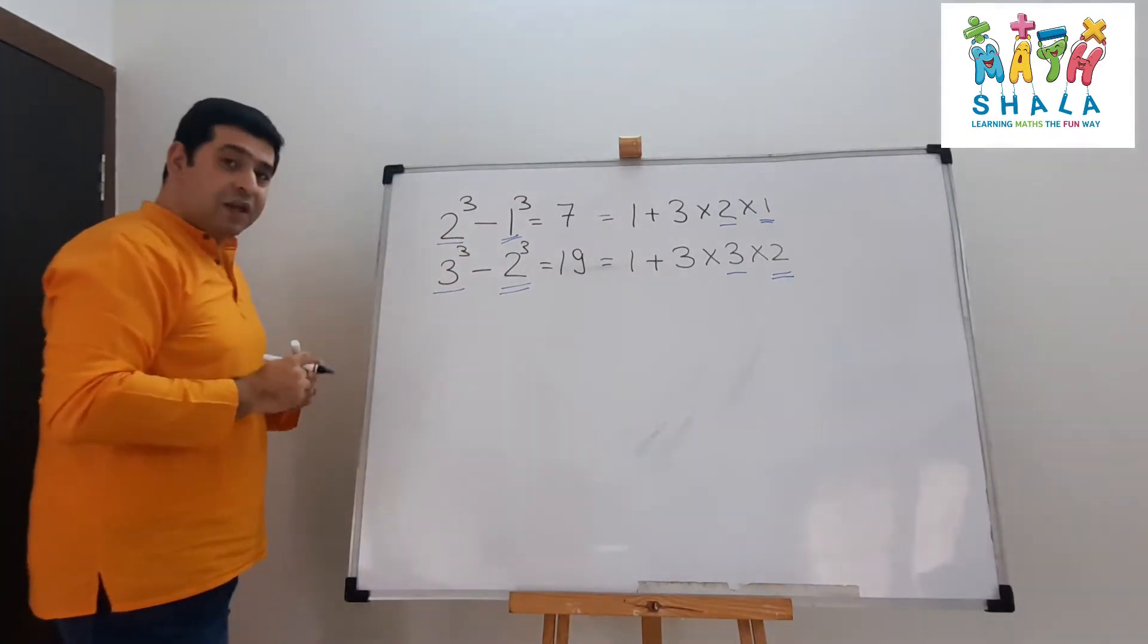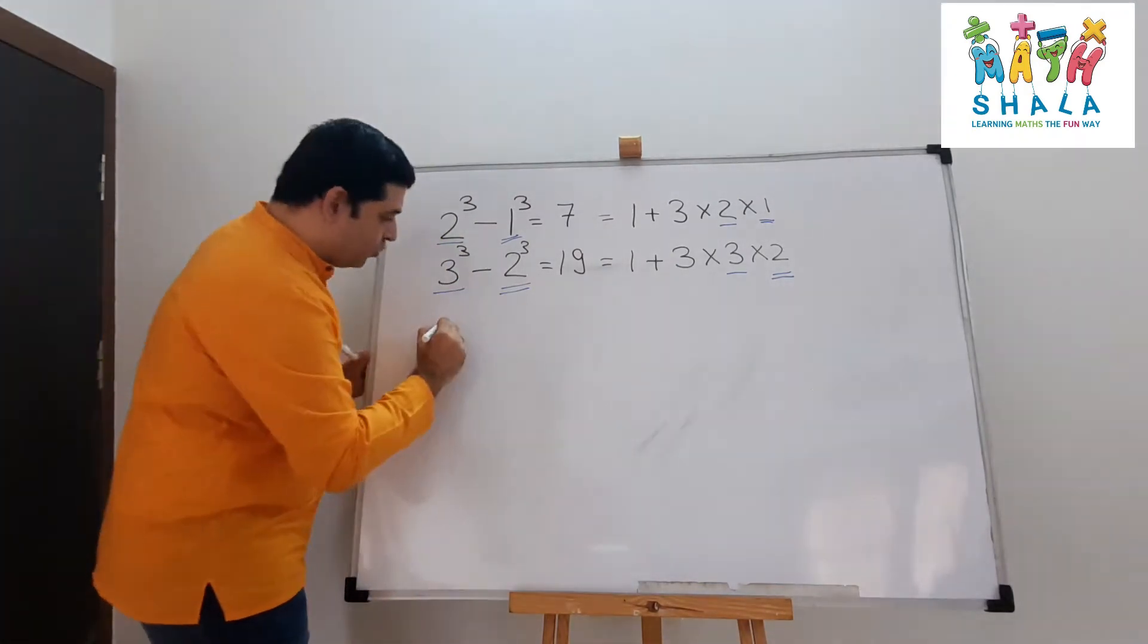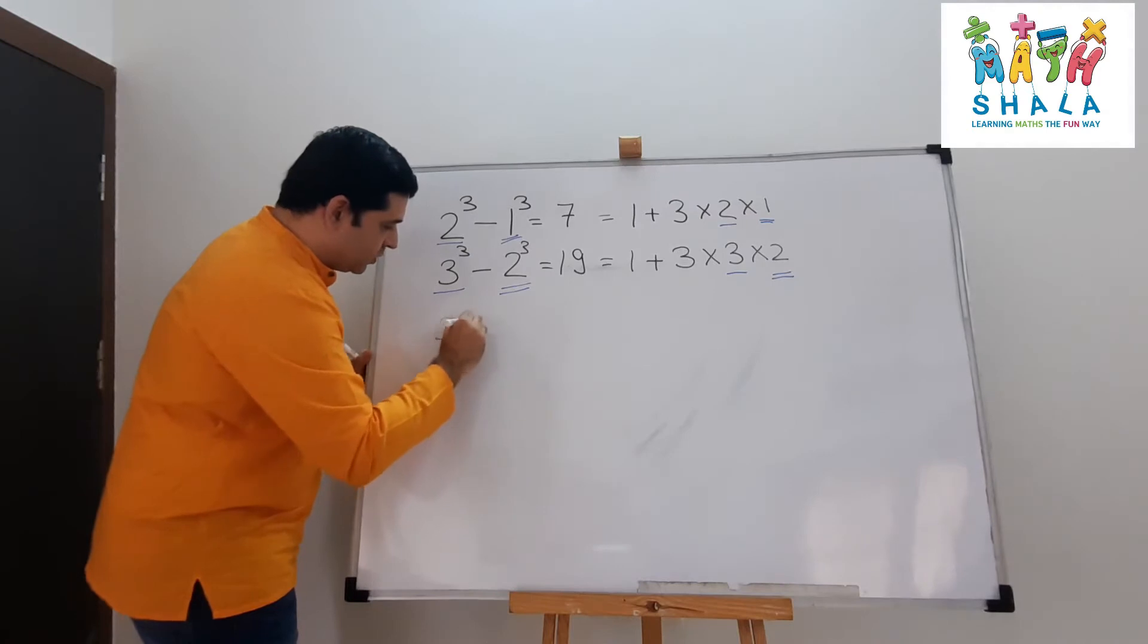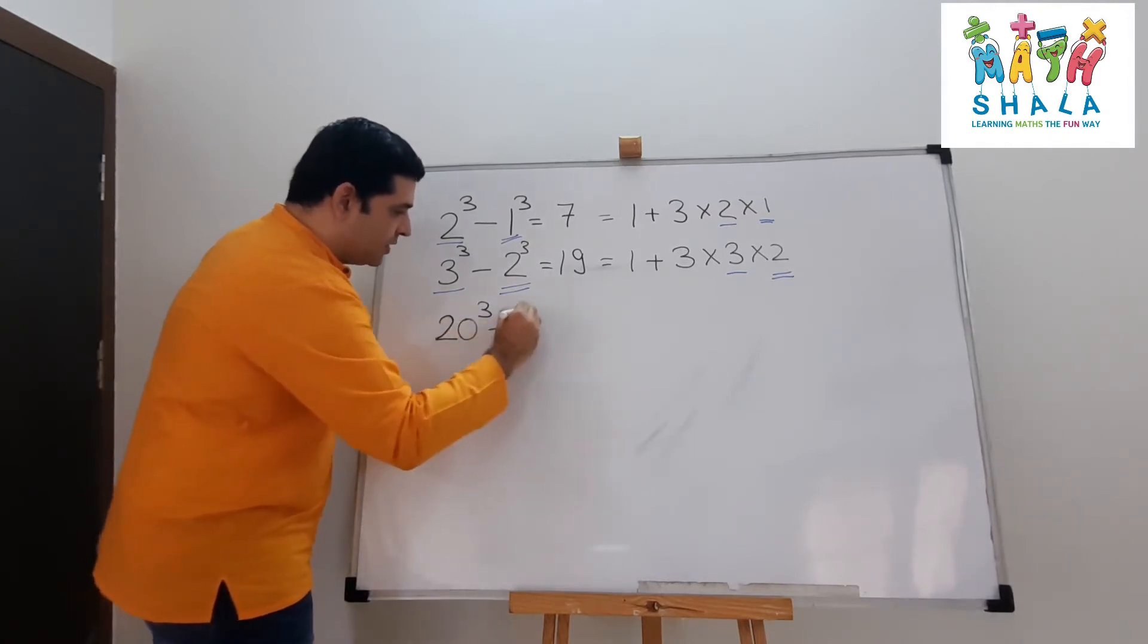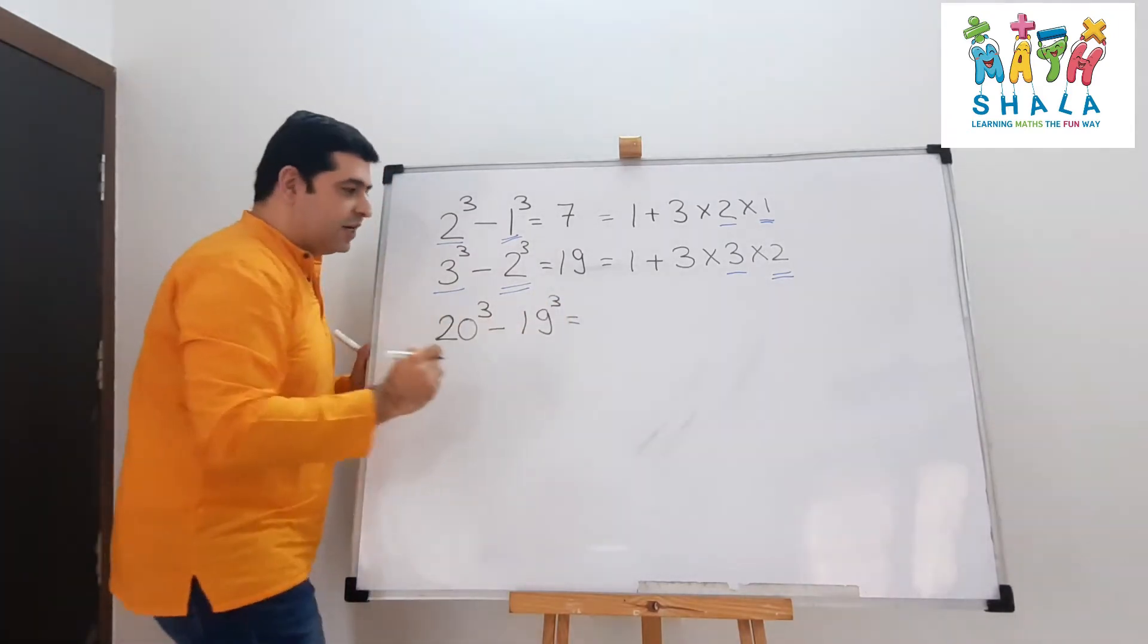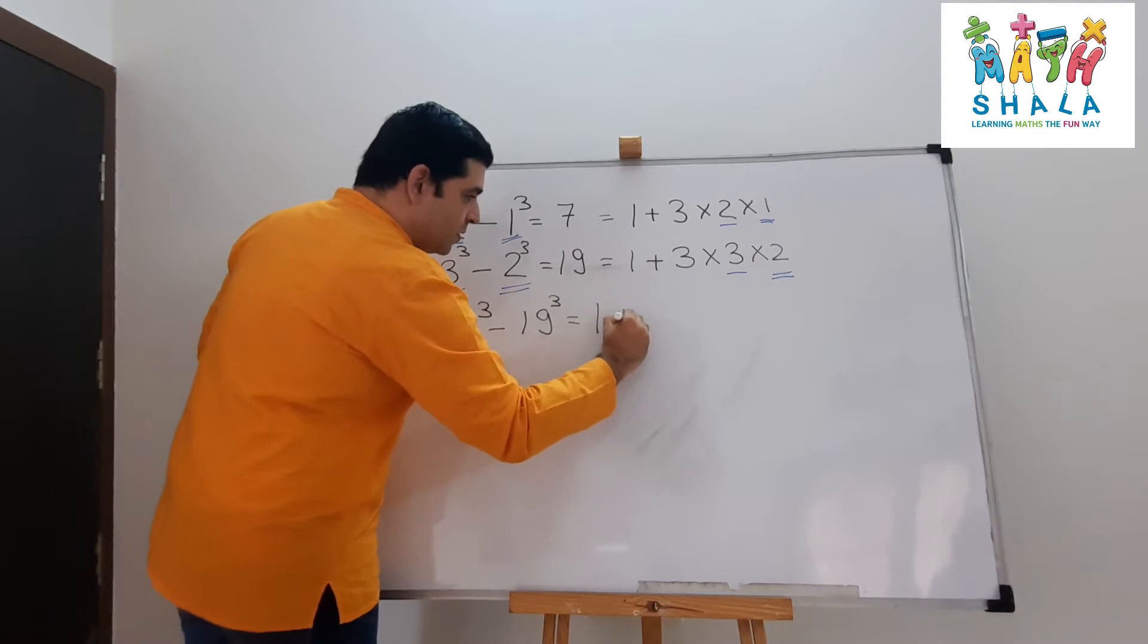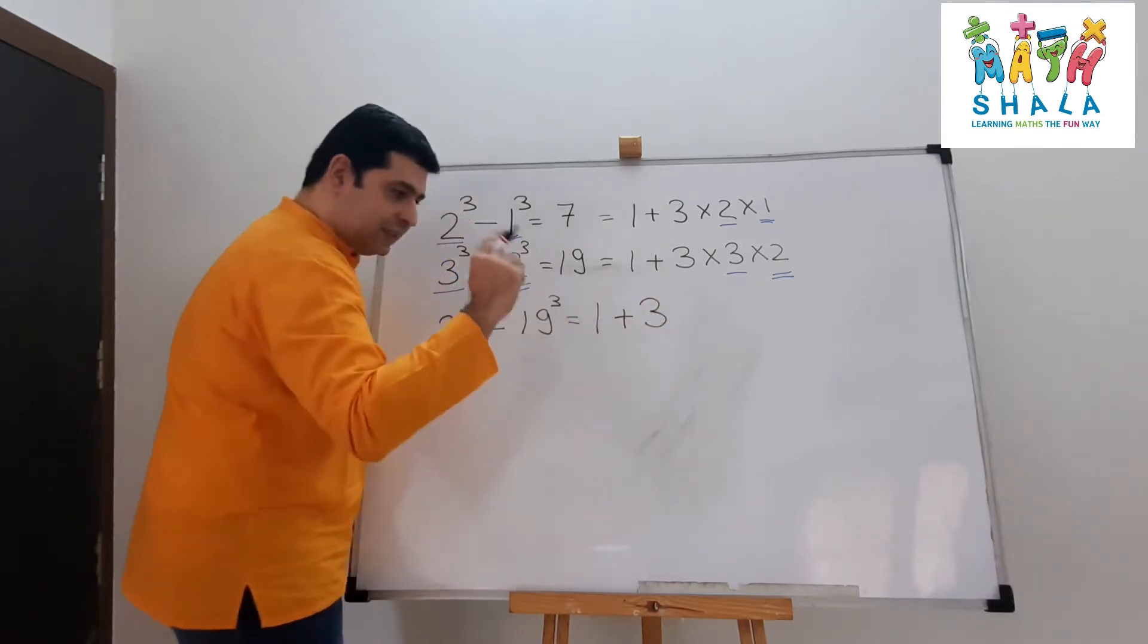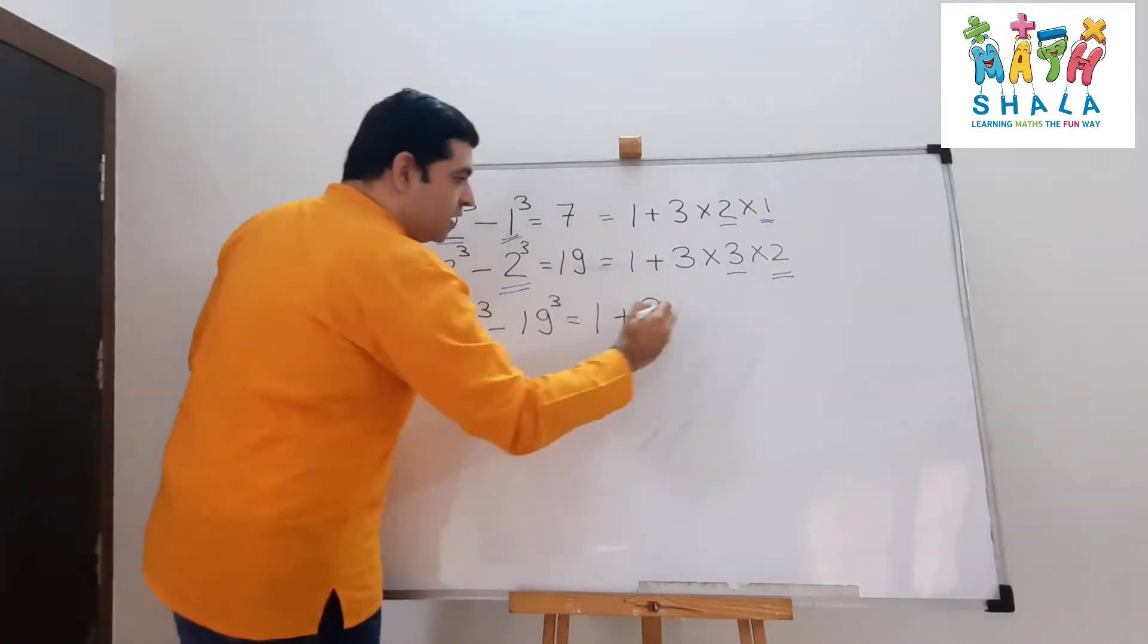That means if I need to find out 20 cube minus 19 cube, I can get a straightaway answer as 1 plus 3 times 20 into 19. Try yourself.